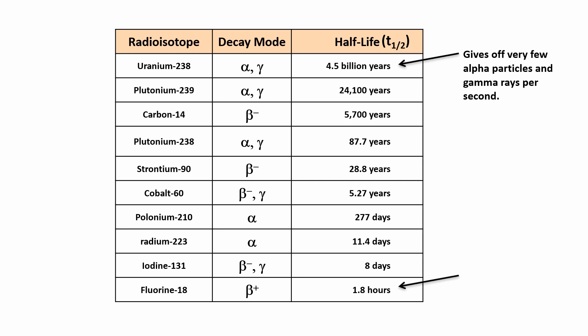Fluorine-18 though has a very short half-life. The atoms are very unstable, and so lots of decays occur per second. Notice how there is a huge difference in the half-lives of plutonium-239 and plutonium-238. A difference of just one neutron can change the stability of an atom in a big way.